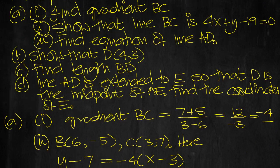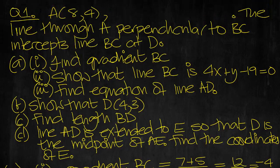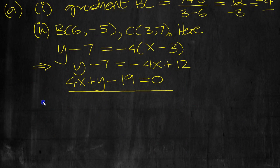Part 3, find the equation of line AD. Perpendicular intersects the line BC at D. So we need the line through A perpendicular to BC. A is 8,4. Let's get that line and then see where it meets the other line, the intersection is D.